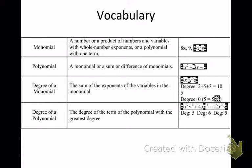First thing, vocab here. First we're going to talk about is a monomial. Now, if poly means many, what does mono mean? It actually means one. So a monomial is one term — something with one term. Examples: 8x, 9, or 3x squared y to the 4th. A polynomial is a monomial or a sum or difference of monomials, so polynomial means many terms.